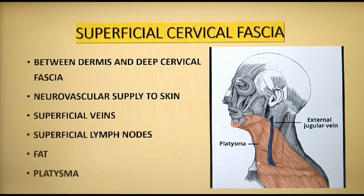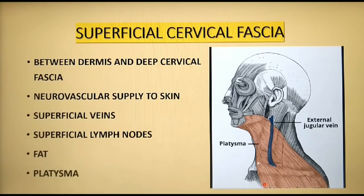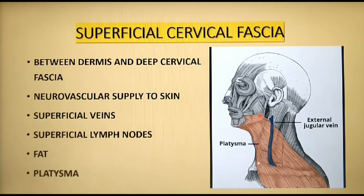Superficial cervical fascia is thinner on the anterior aspect of the neck and it usually has a very thin amount of fat, which is its distinguishing characteristic. At the anterior neck, the superficial fascia blends with the platysma. Platysma is a broad superficial muscle which originates from the fascia over the pectoralis major and deltoid. Its fibers cross the clavicle and meet in the midline, fusing with the muscles of the face. It is beneath the superficial cervical fascia that you can find the external jugular vein.